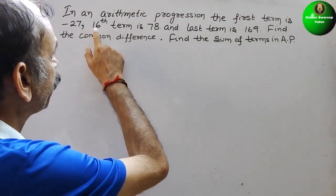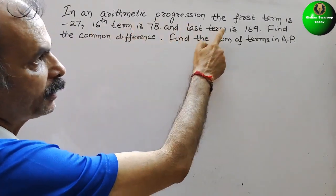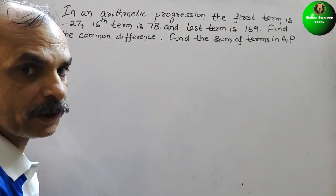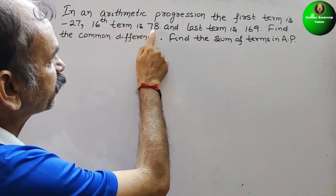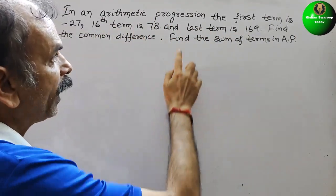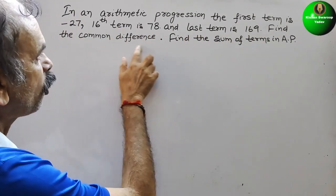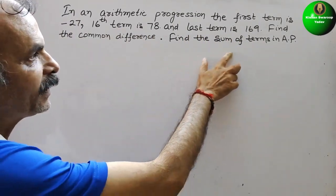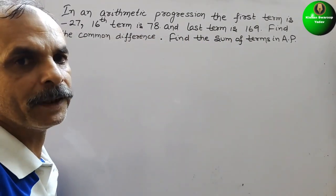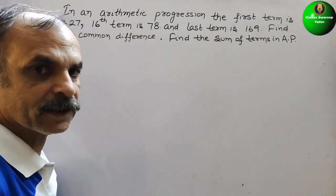Your question is, in an arithmetic progression, the first term is minus 27, the 16th term is 78, and the last term is 169. Find the common difference, find the sum of terms in AP.